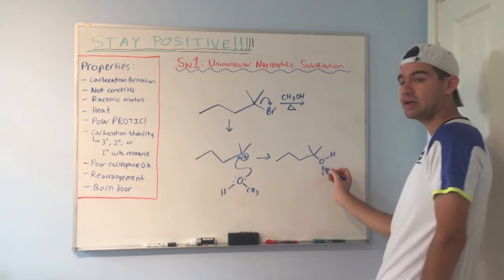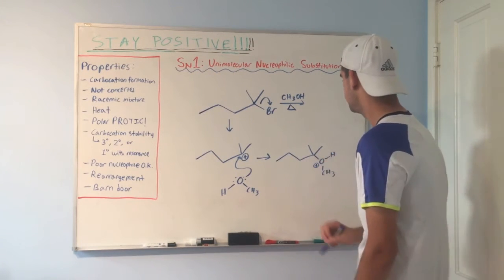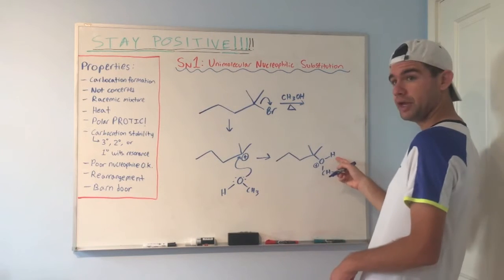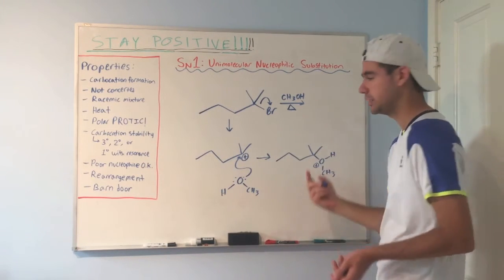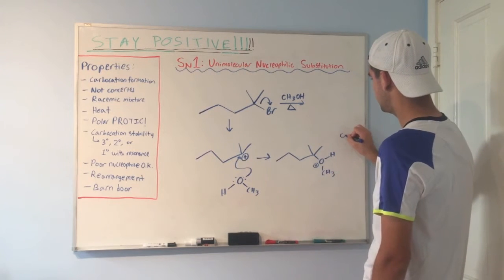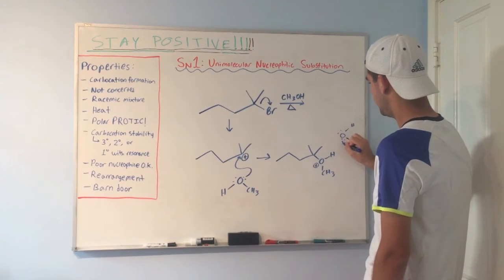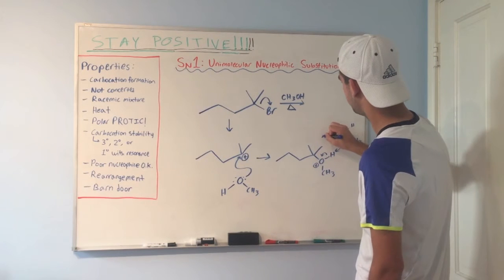But notice this oxygen has three bonds. It only wants two bonds. So it has a plus one formal charge. Now, another methanol floating around in solution is going to deprotonate this H. That's what I meant in the fourth step that I showed. Deprotonation if necessary. Here it is necessary. So I'm going to draw a second methanol molecule. It's going to take that hydrogen away, send those electrons over to oxygen, and make our final product.